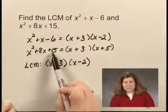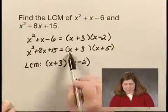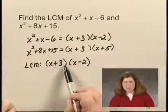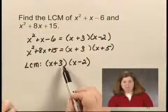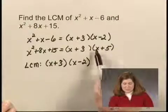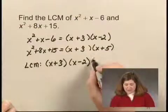Since x squared plus 8x plus 15 contains the same factor x plus 3, we don't need to include it again in the least common multiple. But since it also includes a factor of x plus 5, we need to include that.